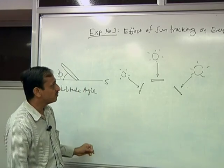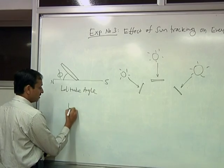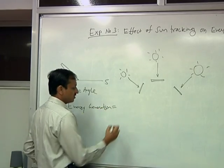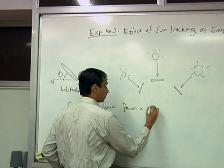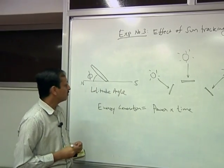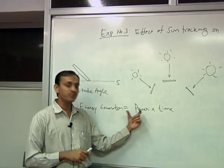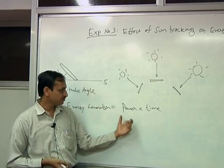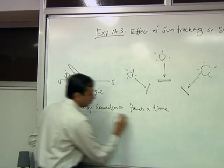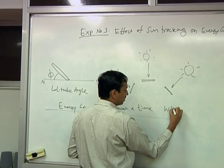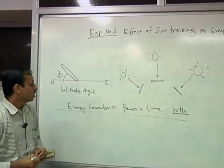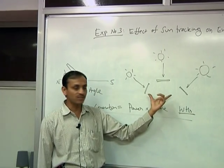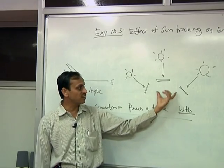The question is how to measure energy. Energy generation is basically power multiplied by time, and the unit will be watt-hours. In your previous experiment you found the peak power or maximum power of a module. So what we need to do now is measure the watt-hours generated over, say, a 3-hour period in the fixed arrangement and in the tracking arrangement, and find out how much extra watt-hours are generated in the tracking case.